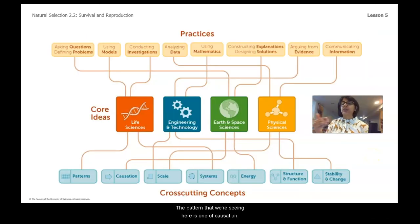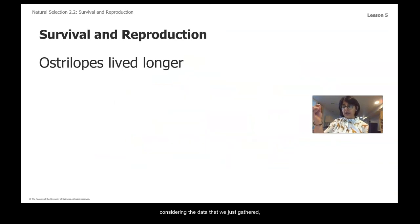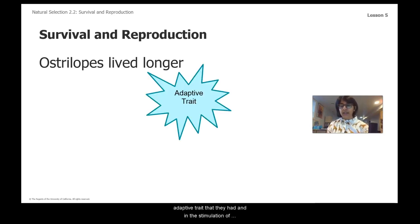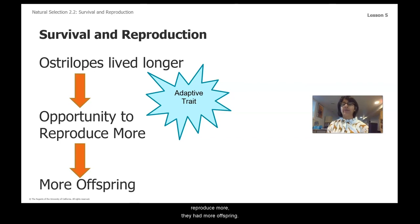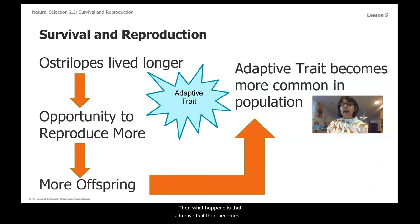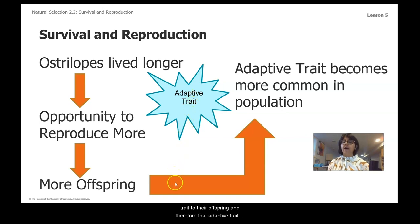The pattern we're seeing here is one of causation — cause and effect, which is right here in our cross-cutting concepts. When australobes lived longer because of an adaptive trait — in the simulation, a color level of seven that matched the environment — they were able to reproduce more, and when they reproduced more, they had more offspring. Then that adaptive trait becomes more common in the population because it is passed on from parents to offspring, so the adaptive trait becomes more common over time.